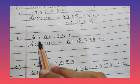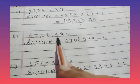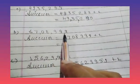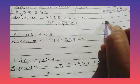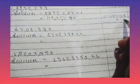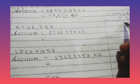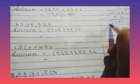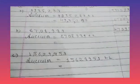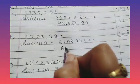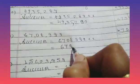Now part B: 67,8,999. The successor of 67,8,999 — just add 1. Working it out: 9+1=10, carry 1; 9+1=10, carry 1; 9+1=10, carry 1; 8+1=9; so we get 67,89,000.